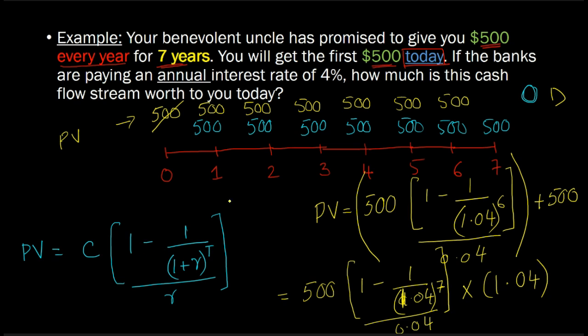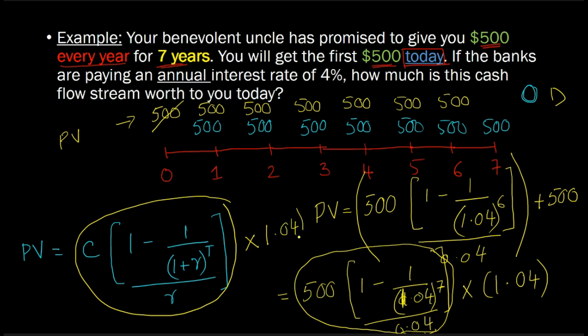Or put differently, basically take the same expression that we had before for an ordinary annuity, so all of this, this is that stuff, like this is the expression for an ordinary annuity that would exist for seven years. Just take that and multiply it by 1 plus R, so 1.04, just do that.